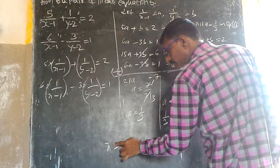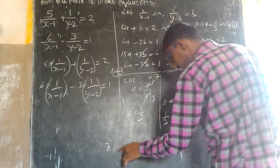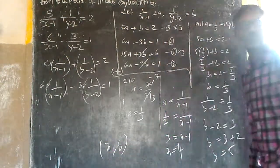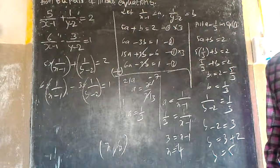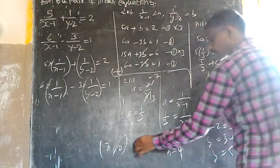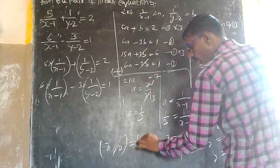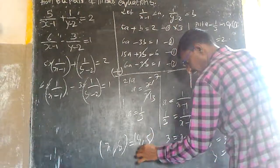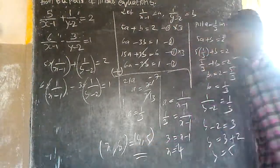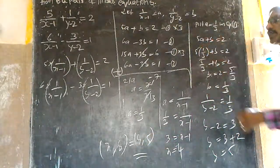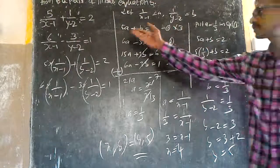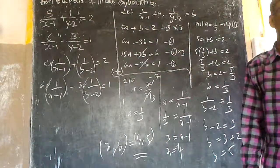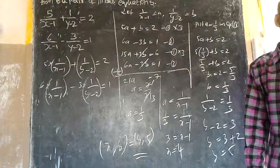Therefore, the solution set x comma y is equal to 4 comma 5. This is the solution. You can verify by substituting x equals 4 and y equals 5 back into the original equations to confirm.